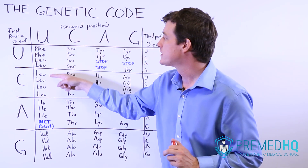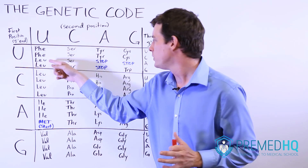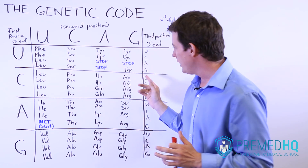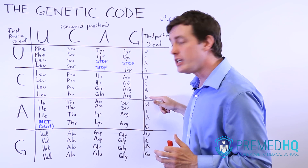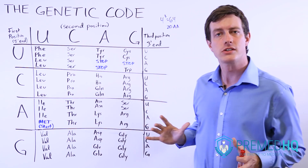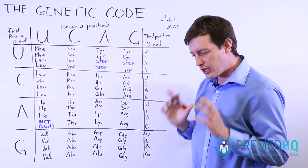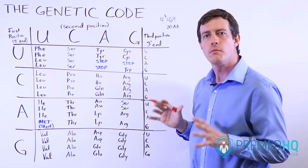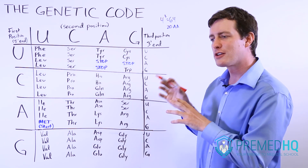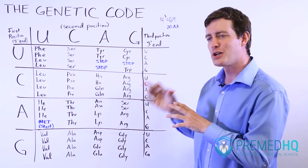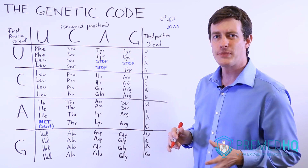Leucine has six different ways that you can encode for it — UUA, UUC, UUU, UUG, and so on. The degenerative code means that there are several different three-member codons that can code for the same amino acid.